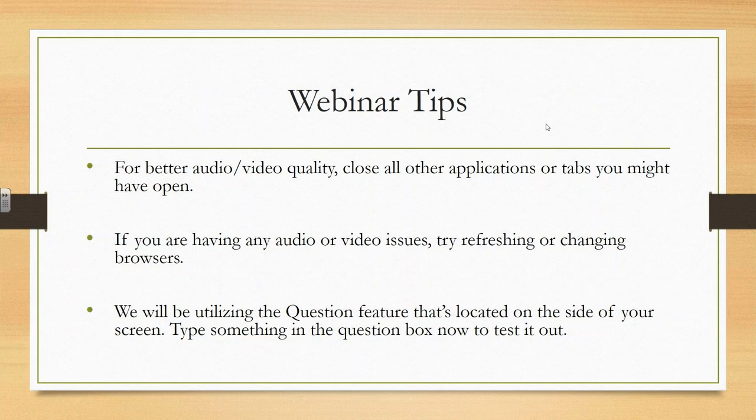For better audio and video quality, close other applications like Skype that use bandwidth. If you are having any audio or video issues, try refreshing or changing your browser. Today we will be using the question feature, since everyone is muted during the webinar. If you have a question, type it in the box. Let's practice now — find the question box and type in the number to represent how many times you have attended an ESGI webinar. If it's your first one, please put one.